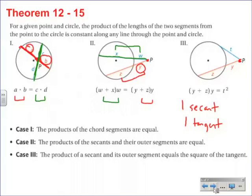Now for case 3, it's a little bit different because of that one tangent line. First, if we focus on the secant line, we'll do the same thing as before. Y plus Z is the entire segment, and if we multiply it by the outer segment, which is just Y, we'll get one side of our equation.